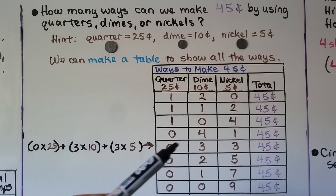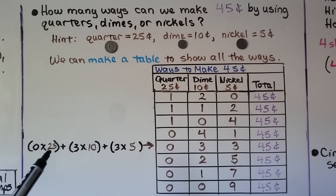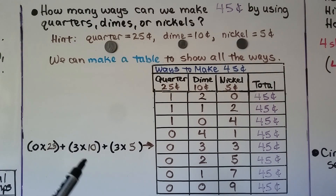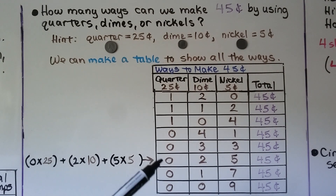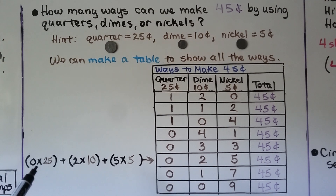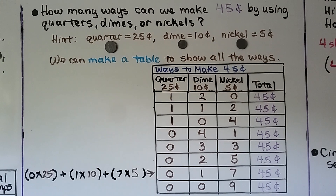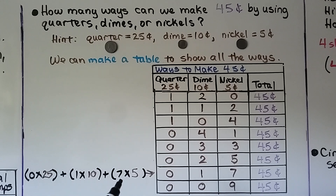We could do zero quarters, three dimes, and three nickels for 45 cents: zero times 25 cents, plus three times 10 cents, plus three times five cents. We could do zero quarters, two dimes, and five nickels to equal 45 cents: zero times 25 cents, plus two times 10 cents, plus five times five cents. We could do zero quarters, one dime, and seven nickels for 45 cents: zero times 25 cents, plus one times 10 cents, plus seven times five cents.